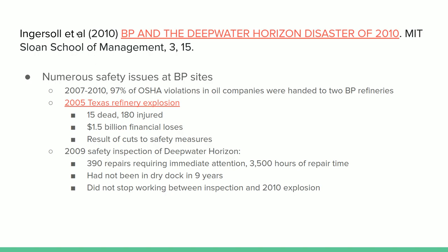Here's the complete citation for the Ingersoll article, which is part of the required readings — a 2010 article written right after the blowout happened. It's from the Sloan School of Management, a business school, so it's not a technical engineering paper; it's really looking at the business ethics and engineering ethics of the case. There's a lot of really good information in this paper, including background on BP's history of regulation violations, including violations on the Deepwater Horizon itself. The Ingersoll article also includes emails from the engineers involved that eventually resulted in the disaster.